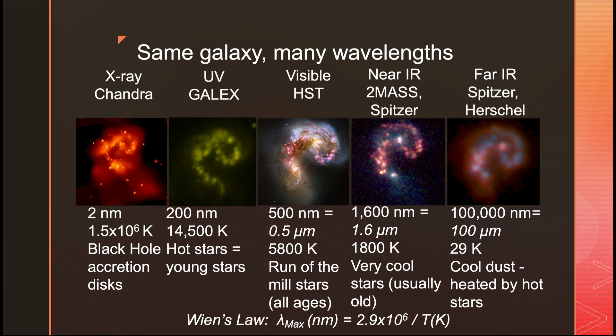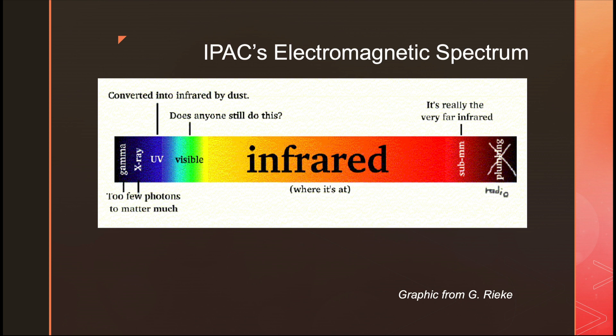In the near-infrared you're looking at wavelengths around 1,600 nanometers or about 2 microns, temperatures around 2,000 Kelvin — generally the very cool, old stars. In the far-infrared, wavelengths are around 100,000 nanometers or 100 microns, about 30 Kelvin — that's the cool dust heated by hot stars. This is how we at IPAC view the electromagnetic spectrum; we are very biased toward the infrared because that's what we do.